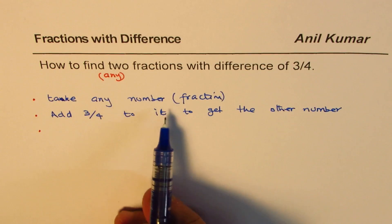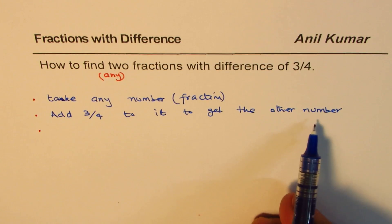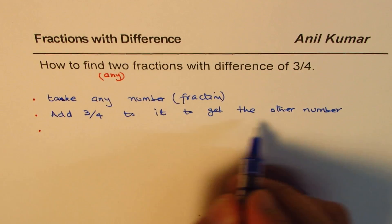So, you get two numbers. The starting number, and when you add 3 by 4, the other number. So, the starting number and the final number.